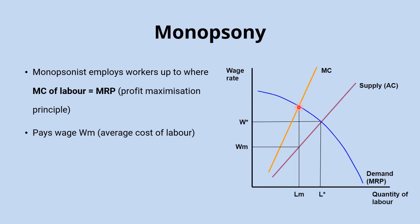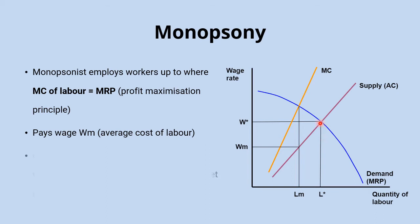At this quantity of labour, the monopsonist pays workers based on the supply curve — the average cost of labour — which equals the wage rate. So the monopsonist employs quantity LM and pays wage WM. In a competitive labour market, the wage rate would be higher at W* and the quantity of labour employed would be higher at L*. This shows that the monopsonist employs fewer workers and pays a lower wage than would be the case in competitive labour markets.